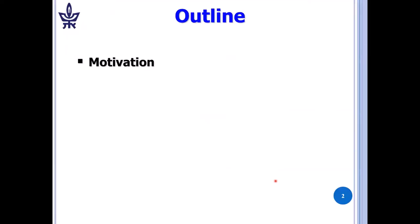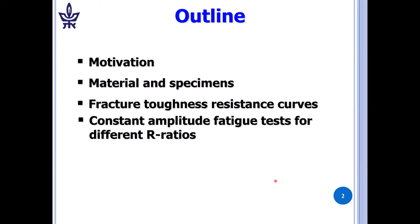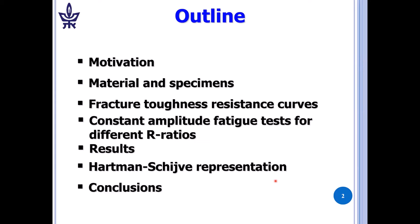First we'll talk about the motivation, why we're interested in making the study, and then I'll present the material systems and the specimens. We'll look at the fracture toughness resistance curves. We carried out constant amplitude fatigue tests for different cyclic R ratios and we'll look at the results. Then we'll represent it in a different fashion with the Hartman-Schijve representation, which was originally developed for metals, and then we'll draw some conclusions.